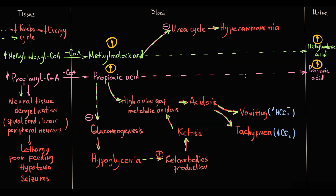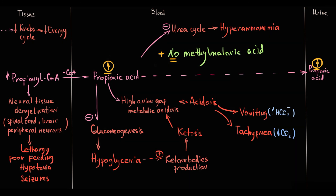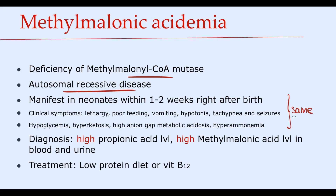In propionic acidemia, propionic acid level is high but methylmalonic acid level is very low or even completely absent. In methylmalonic acidemia, the major diagnostic feature is high propionic acid and high methylmalonic acid in both blood and urine — high methylmalonic acid level is absolutely the key diagnostic feature. Treatment is a low-protein diet, and if the low activity of methylmalonyl-CoA mutase is caused by vitamin B12 deficiency, injection of vitamin B12 must be prescribed.